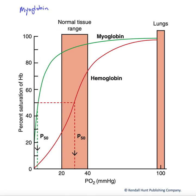In this graph, we want to look at another oxygen-binding protein known as myoglobin. Myoglobin is found in the cytoplasm of striated muscle, especially cardiac muscle and slow-twitch skeletal muscle. It actually gives the reddish color to that particular tissue.